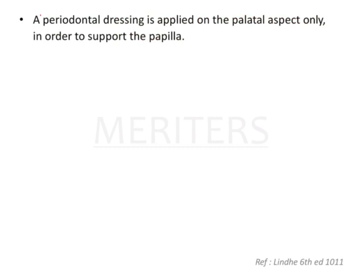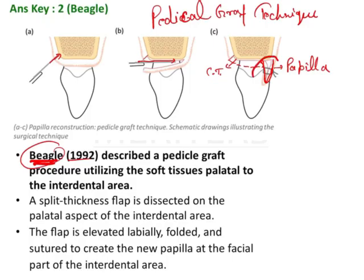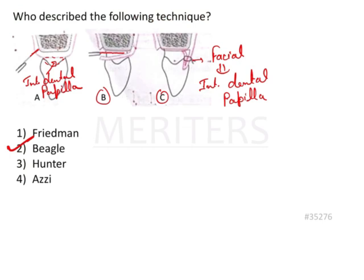One more thing to add: there should be use of a periodontal dressing, generally done for supporting the papilla. Whatever pedicle you have created — the artificial or reconstructed papilla — has to get support initially, and that is provided by the periodontal dressing. So the answer is Beagle. This is a papilla reconstruction technique, also known specifically as the pedicle graft technique.